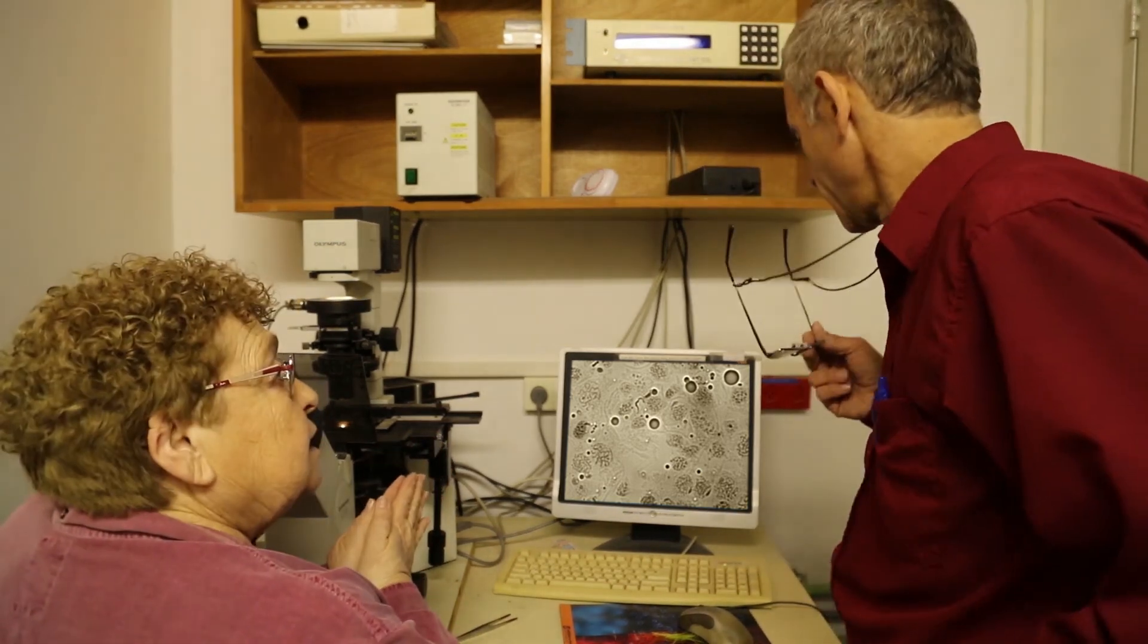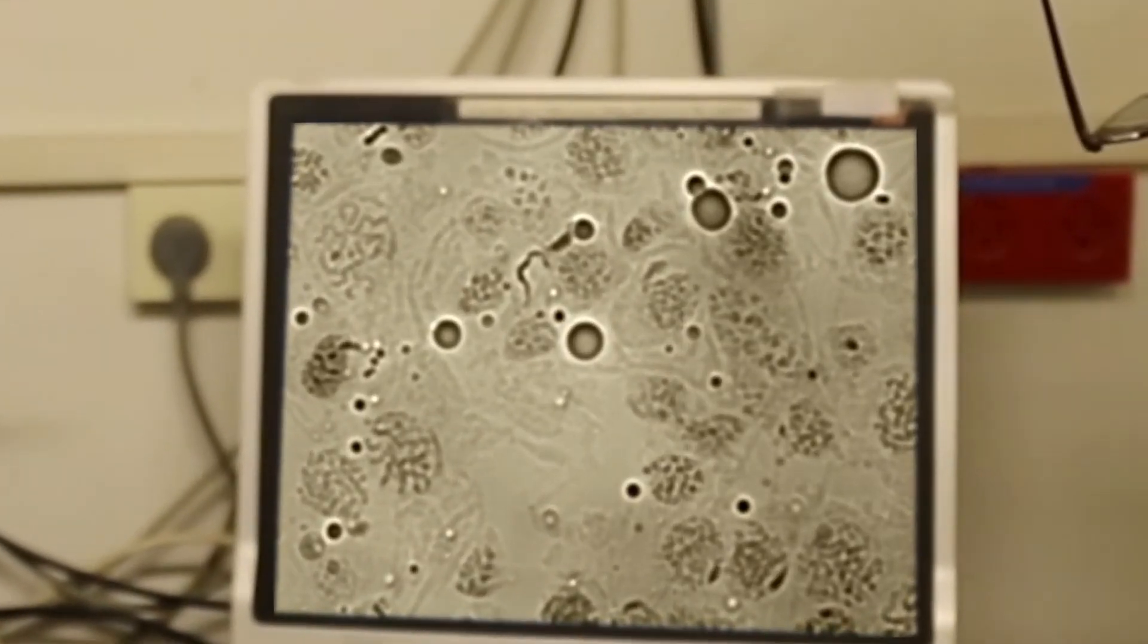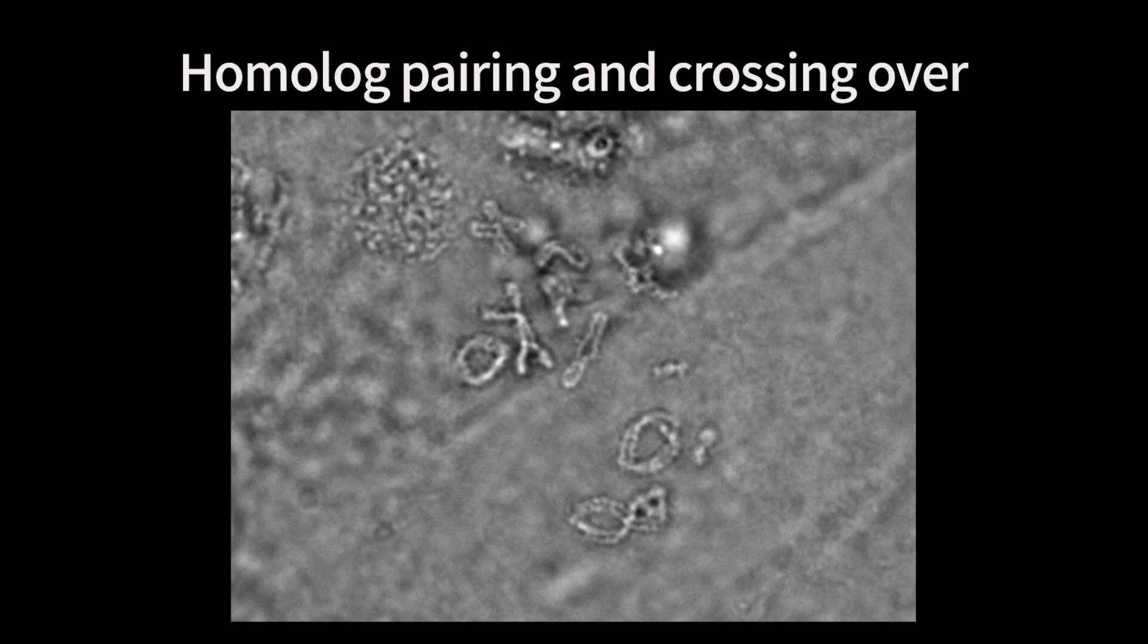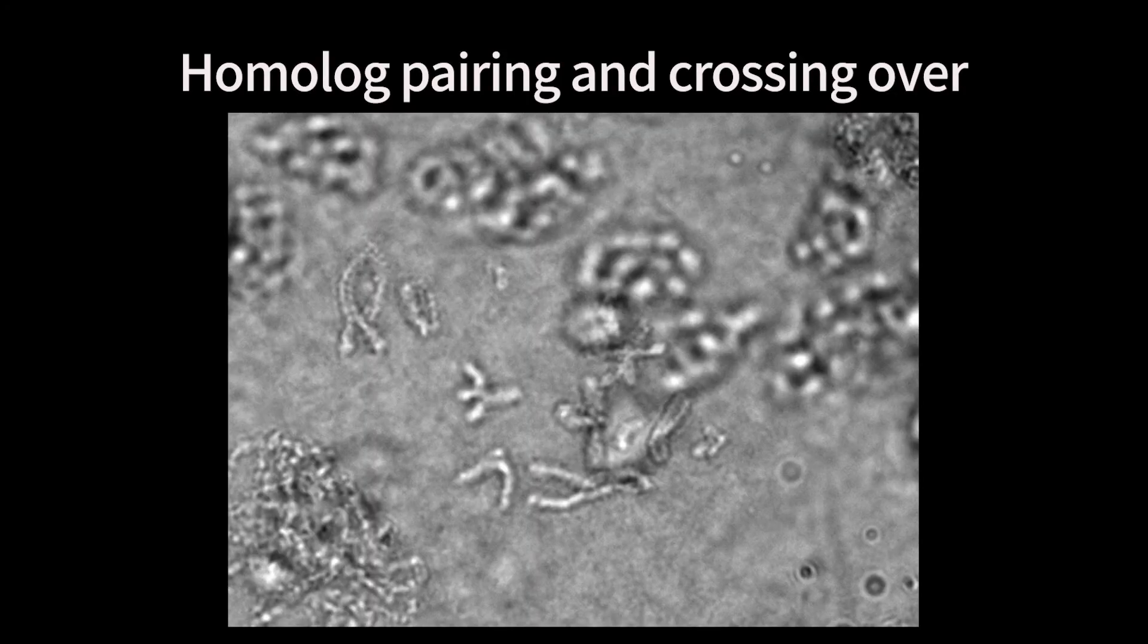Not only preparation, but also analyzing and interpreting these slides requires a lot of skill. Here Dr. Richler has spotted several cells at the stage of homolog pairing and crossover in meiosis 1.